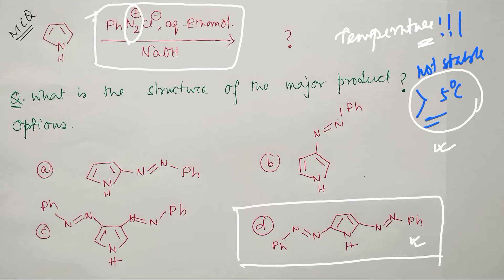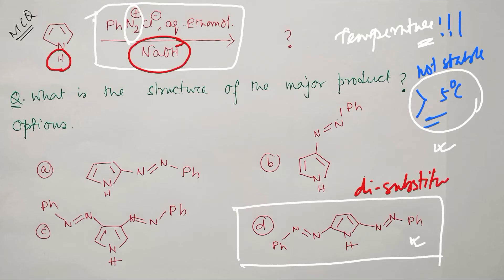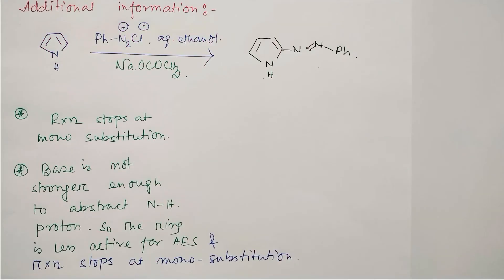Now, we observed that the acidity of the NH proton and the presence of a strong base (sodium hydroxide) is responsible for disubstitution. But what if we use a relatively weak base instead of sodium hydroxide? For example, sodium acetate — which is made from sodium hydroxide and acetic acid, so it is relatively weaker. The question is: will it be able to abstract the proton efficiently?